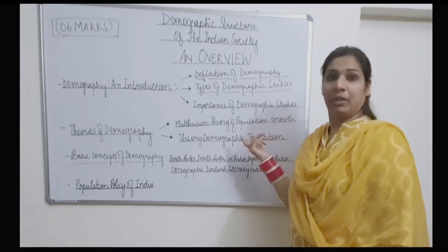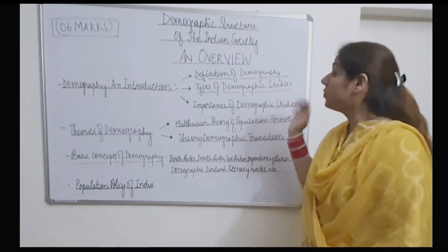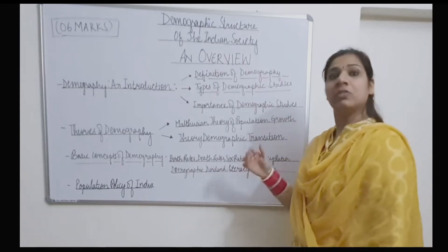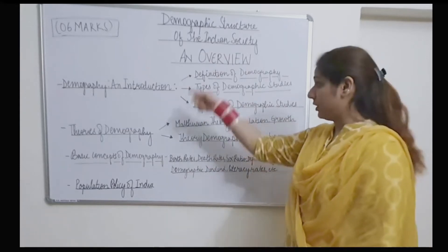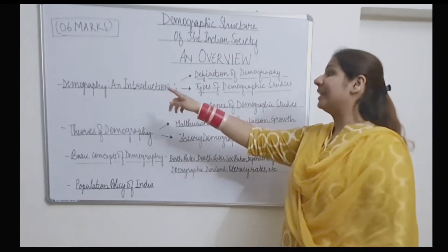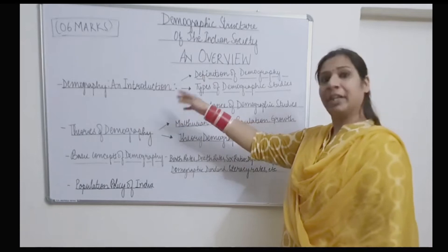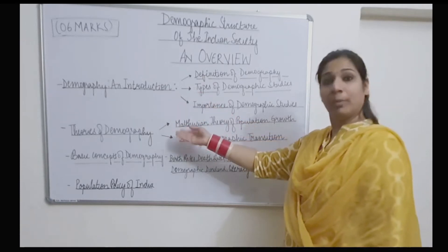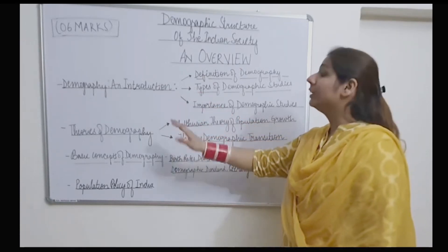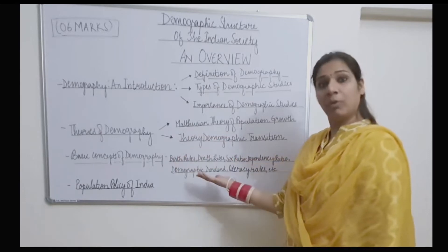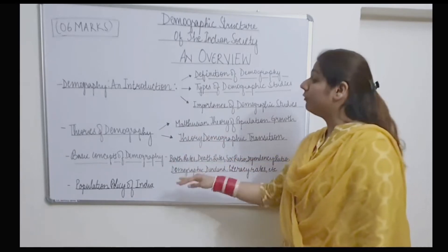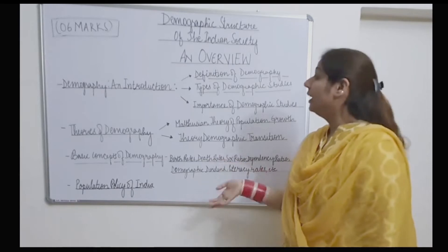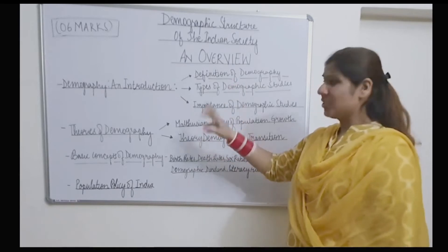There are four major headings in this chapter. The first is 'Demography and Introduction,' the second is 'Theories of Demography,' the third is 'Basic Concepts of Demography,' and the fourth is 'Population Policy of India.'